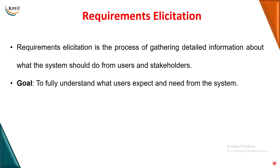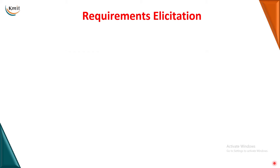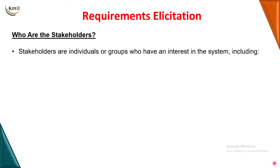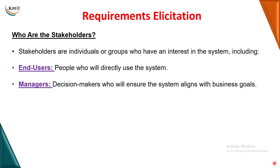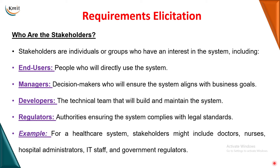Users are the people who are directly interacting with the system. Stakeholders are the people or group of people who are directly or indirectly involved with the product being developed. These include end users, managers, developers, and regulators. Regulators could be suppliers or government sector employees — for example, lawyers hired by the company to handle legal issues. Such third-party people are called regulators. So in requirements elicitation, we collect requirements from both users and stakeholders.